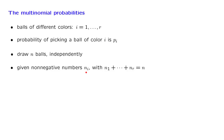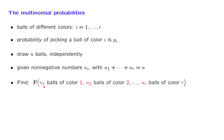We are interested in the following kind of question. Somebody fixes for us certain numbers n1, n2, up to nr, that add up to n, and asks: what is the probability that when you carry out the experiment, you get exactly n1 balls of the first color, exactly n2 balls of the second color, and so on? For a particular choice of those numbers, we want to calculate this probability.